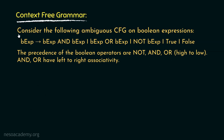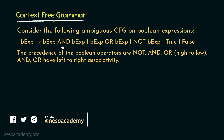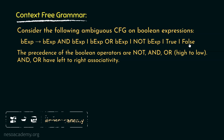Let's now resolve the next problem. Consider the following ambiguous CFG on Boolean expressions. A Boolean expression BEXP can be rewritten as: BEXP AND BEXP, or BEXP OR BEXP, or NOT BEXP, or TRUE, or FALSE. The precedence of the Boolean operators from high to low is: NOT, then AND, then OR. Also, the operators AND and OR have left-to-right associativity.